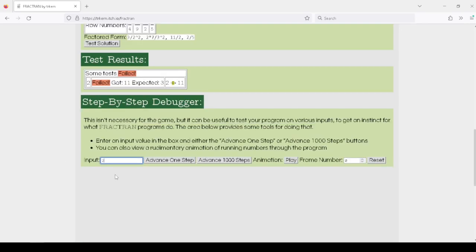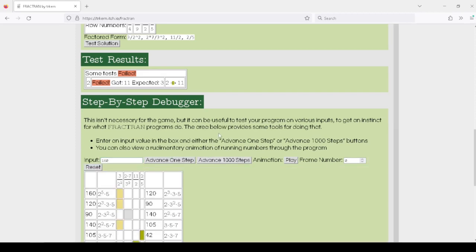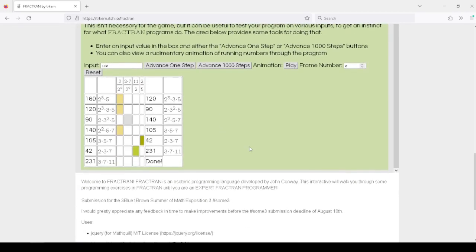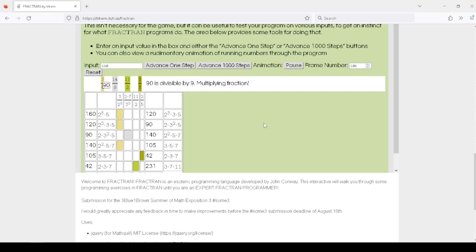You can also see what happens when you run it on various other inputs, such as 160. It will show you both the list of numbers and highlight which fraction gets used at each step.